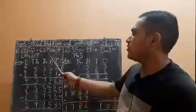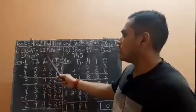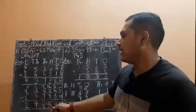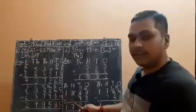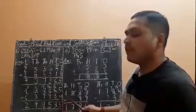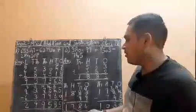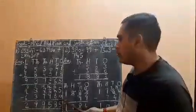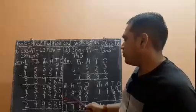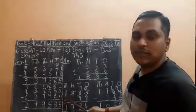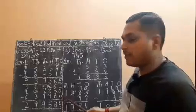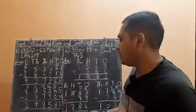Now you have to subtract as well. So 6,37,980 will be subtracted from 9,37,565. The larger number is written at the top and the smaller number at the bottom, and you subtract from the right-hand side. 5 minus 0 — whenever you subtract 0 from any number, you get the same number — so 5 minus 0 is 5.